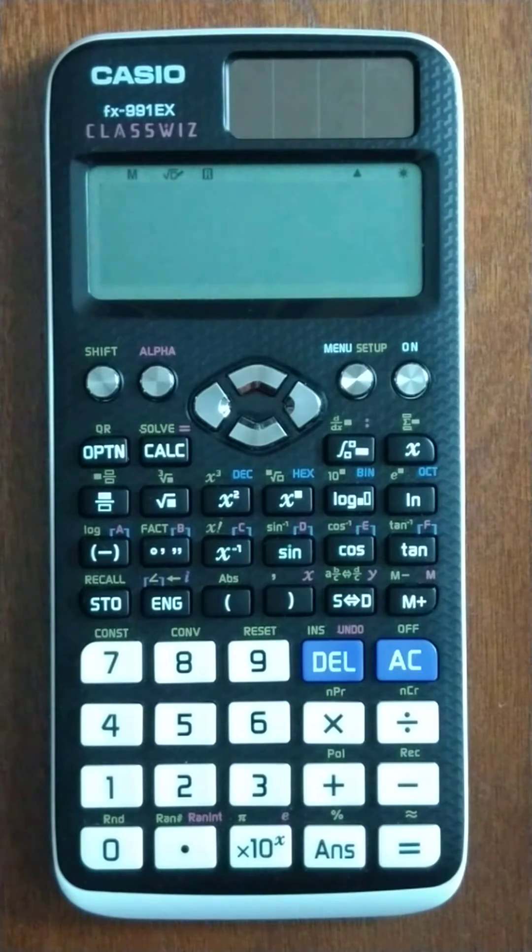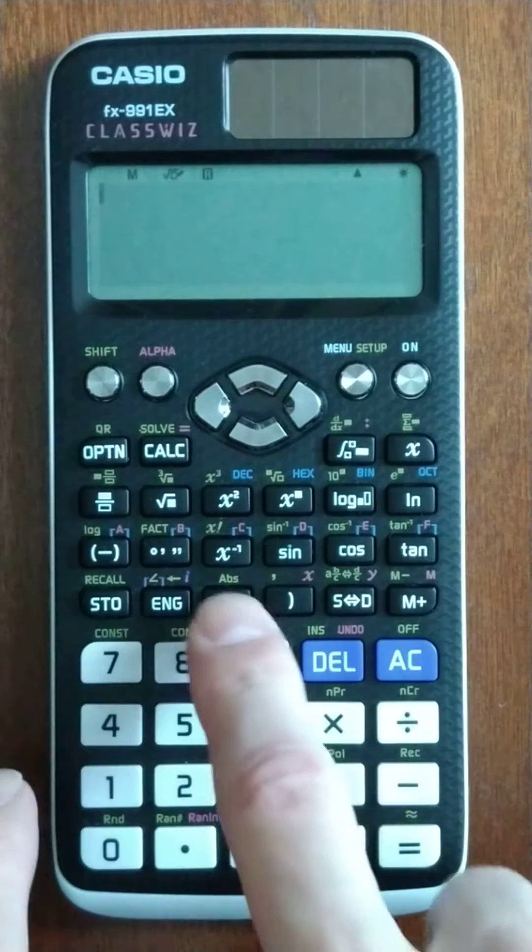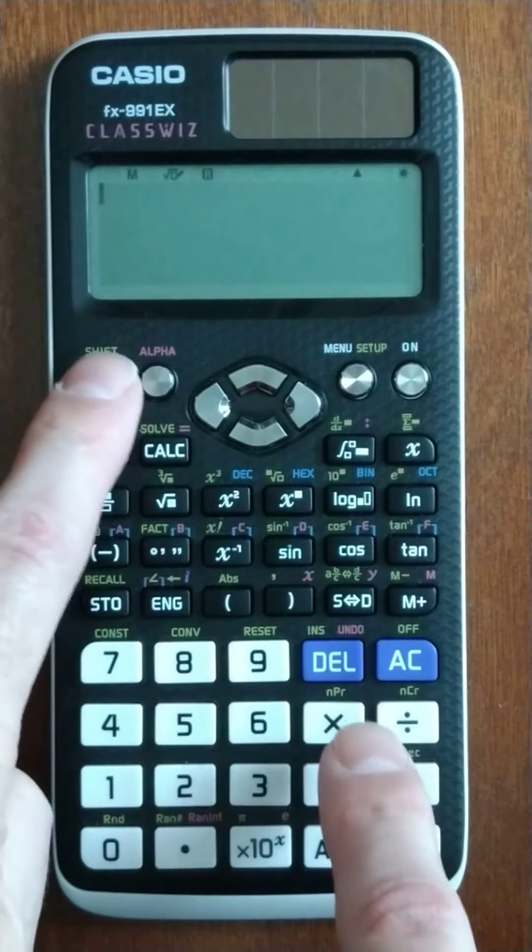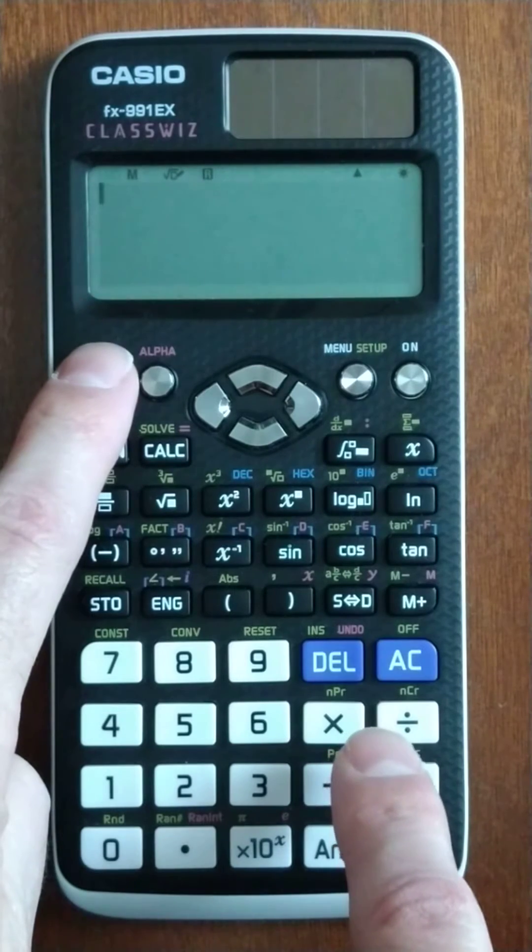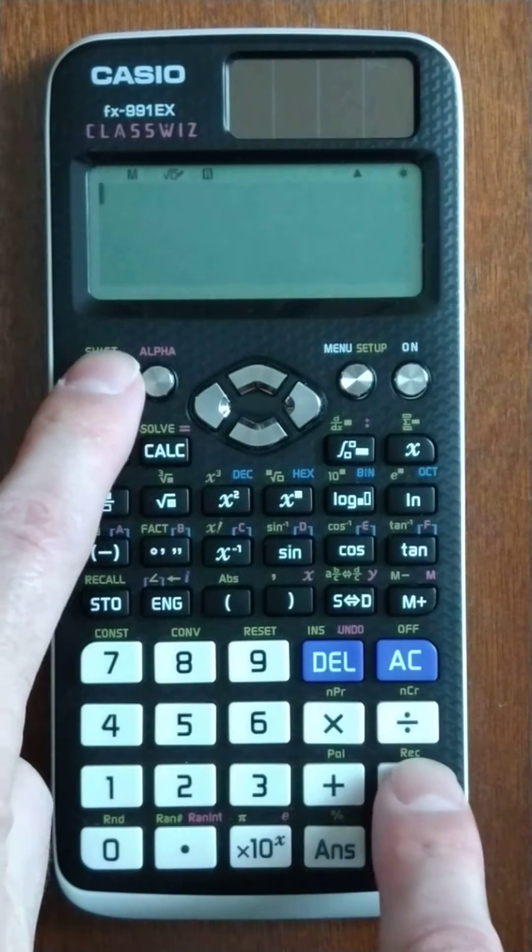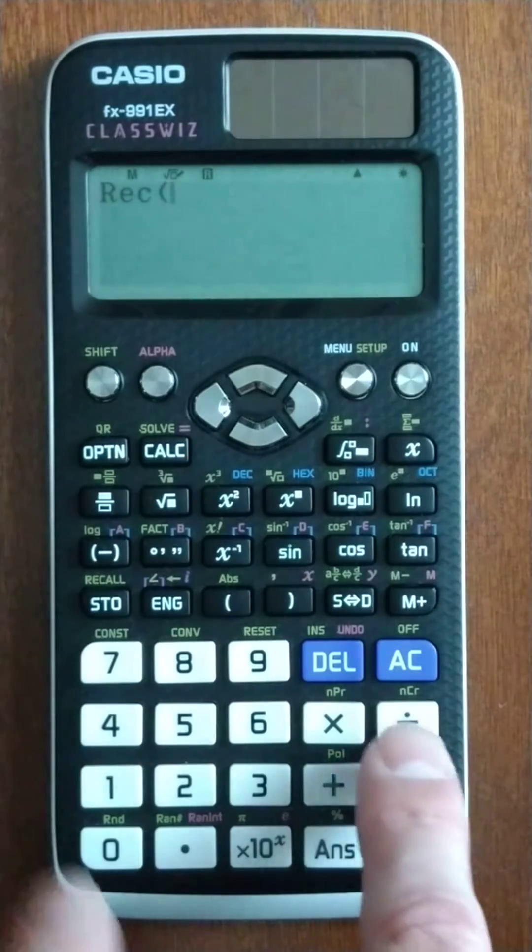Okay, we're going to do some coordinate conversions. With polar, let's convert polar coordinate negative 2 comma, or at an angle of negative 2 pi over 3. We want to convert it to rectangular, so we do shift and rectangular.